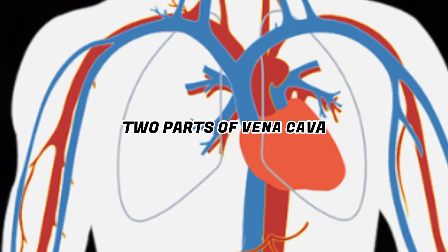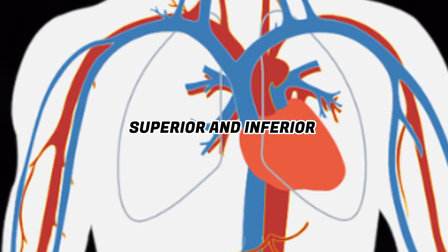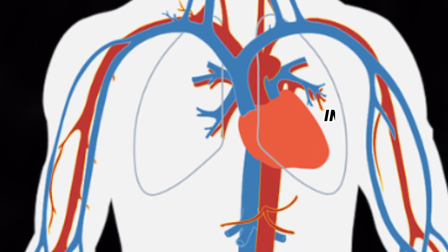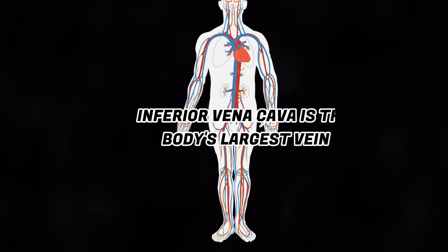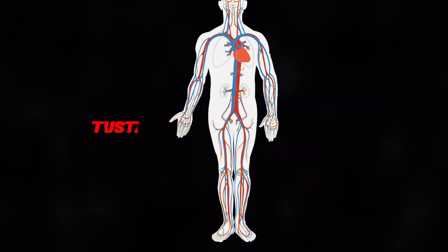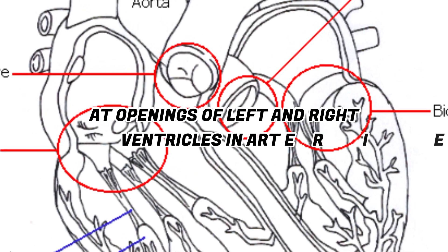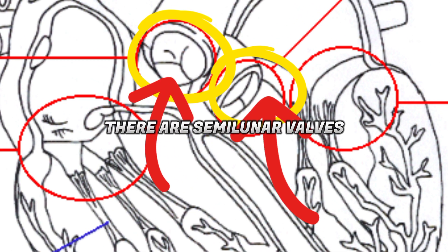Two parts of the vena cava: superior and inferior. They carry deoxygenated blood and open into the right atrium. The inferior vena cava is the body's largest vein; it has a eustachian valve. At the openings of the left and right ventricles into arteries, there are semi-lunar valves.